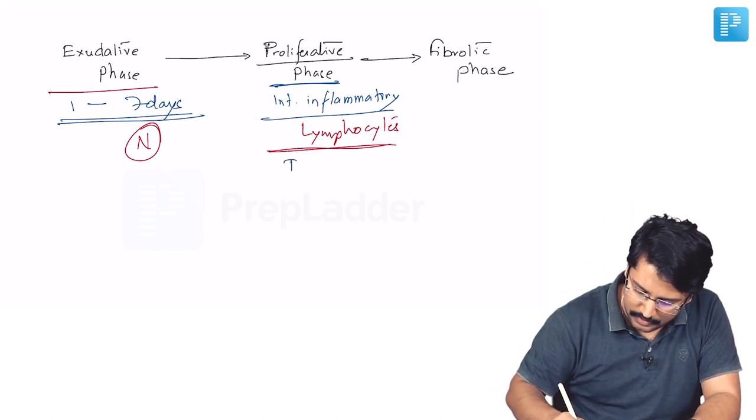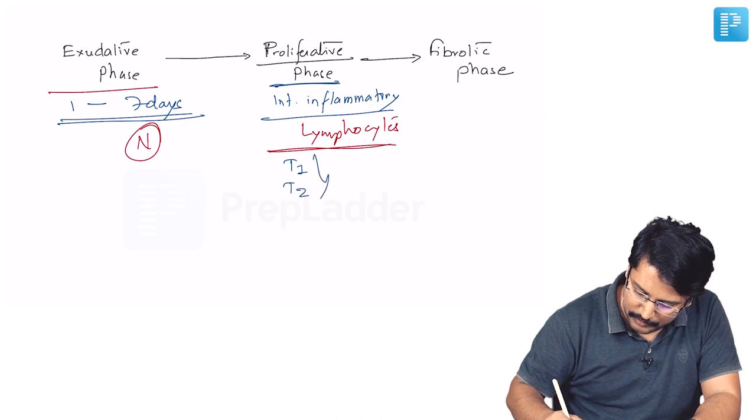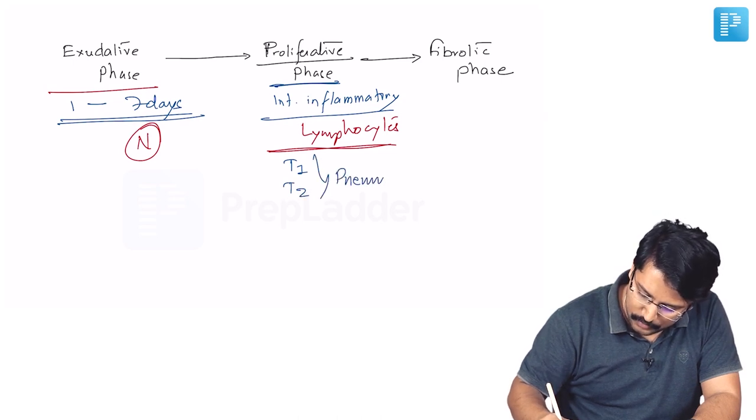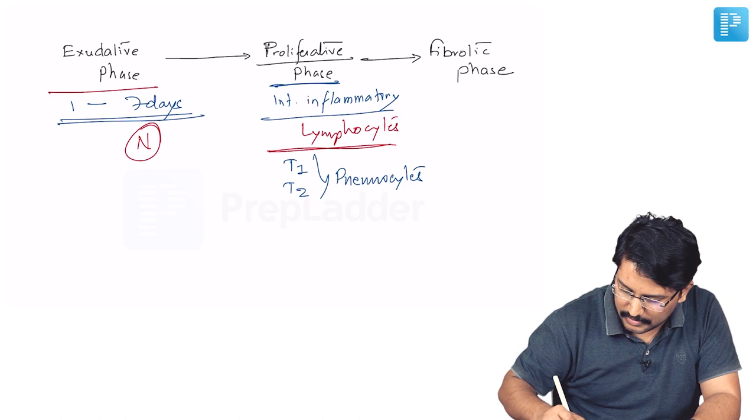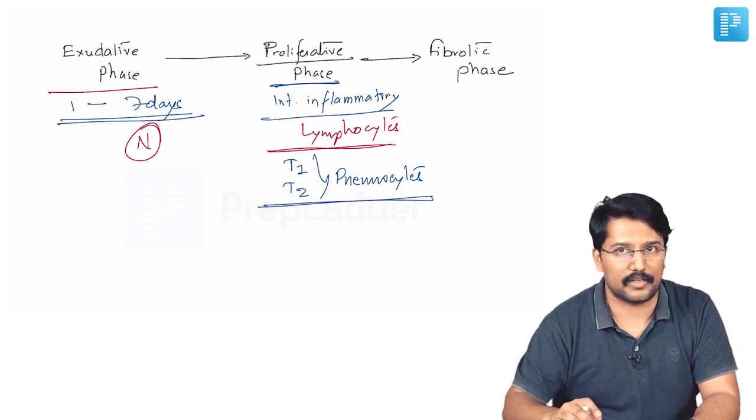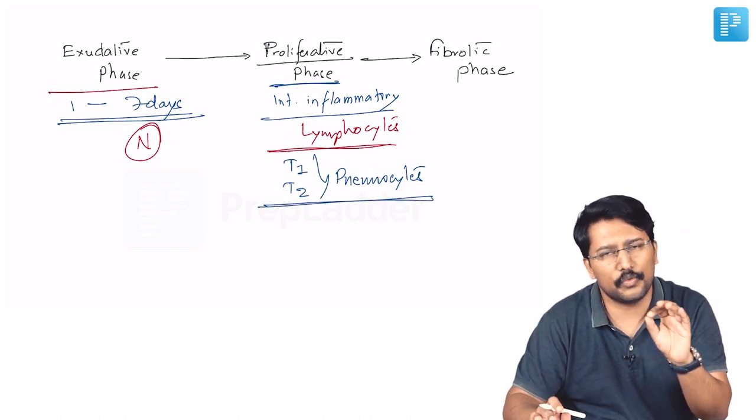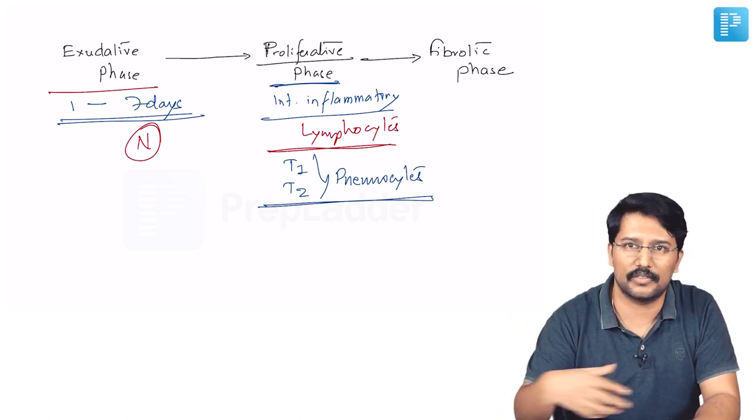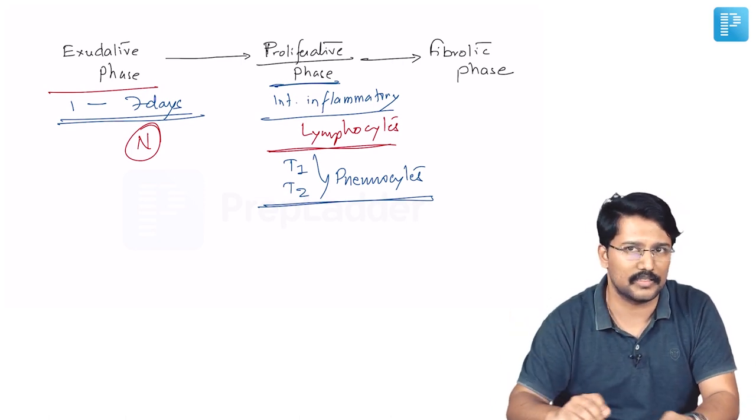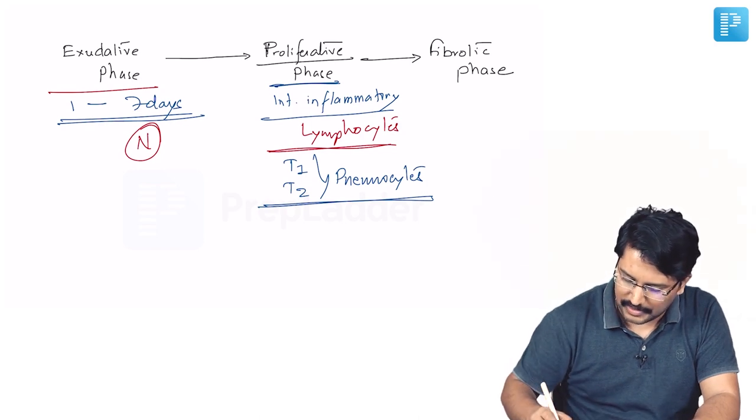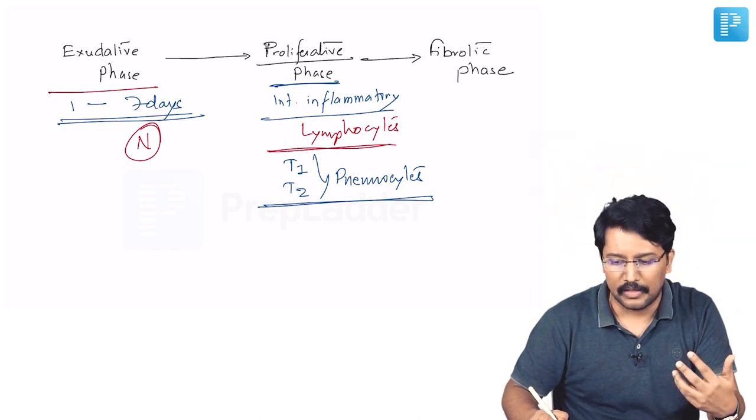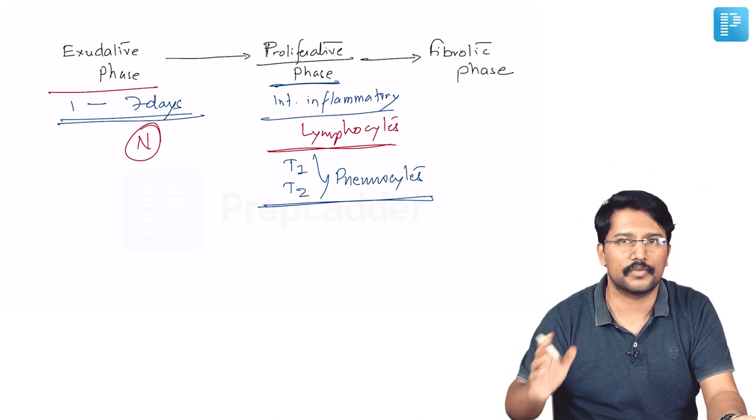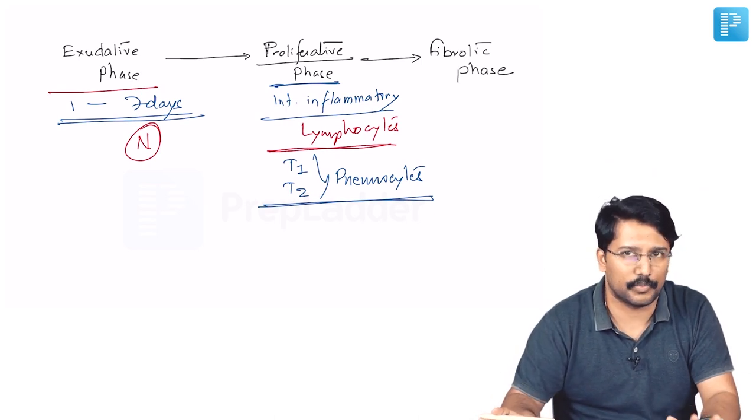There is proliferation of type 1 as well as type 2 pneumocytes. So whatever alveolar damage that had happened is now being repaired. That is all happening in the proliferative stage. You may also see some kind of clinical improvement in patients. So his requirement for oxygen or ventilator support may start declining at this stage. Most patients at the end of this proliferative stage will be clinically free from assisted ventilatory support most of the times.